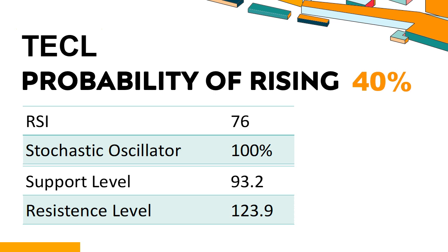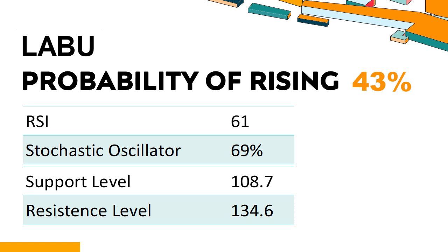TECL's short-term support level is 102.6. If it falls below 102.6 during the session, it will have a chance to test 93.2. TECL's short-term resistance level is 116.4. If it breaks through 116.4 during the session, it will look up to 123.9.